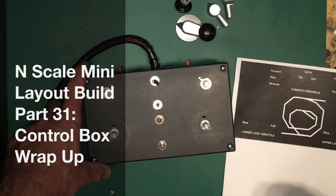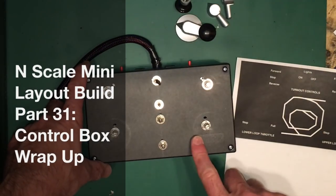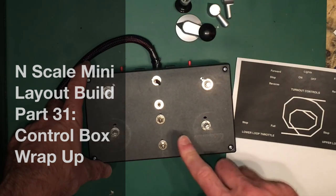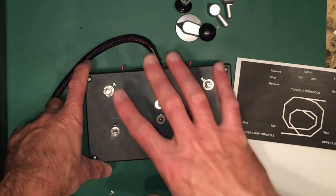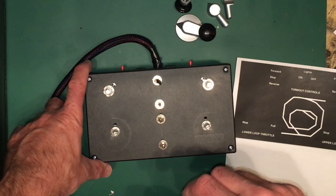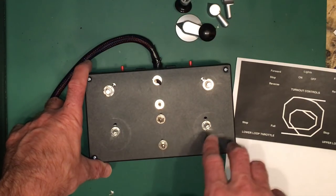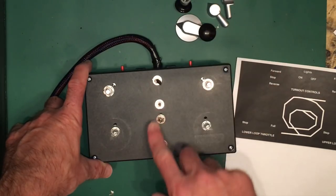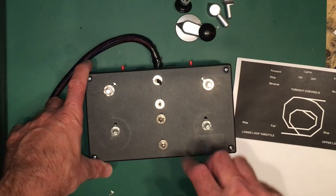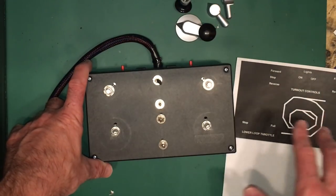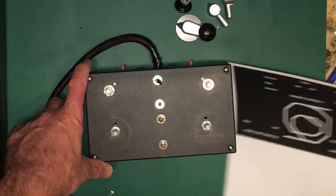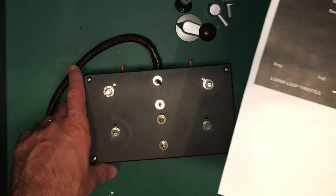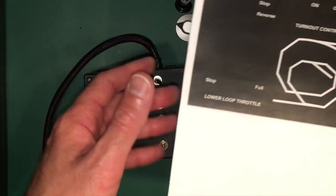Hello everybody. I'm on to the final stage of building my control box for the N-Scale Mini Layout project. I've already taken off the control knobs, but I still have to remove all the nuts that hold on the various controls and slide those out, and then apply the label that I created for the words and track diagram.